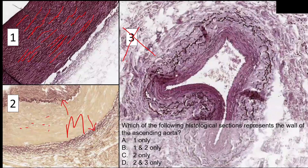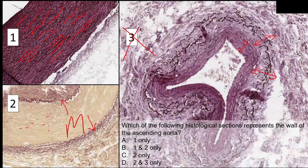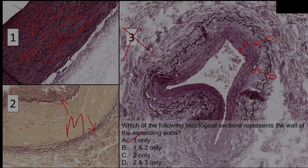It's a vein. There is no internal elastic lamina. The tunica externa is the thickest layer, while in an artery the tunica media should be the thickest layer. So it's not an artery at all. The correct answer here is one only.